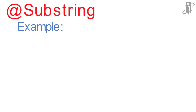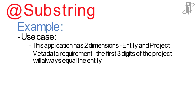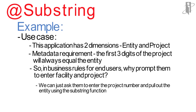Let's look at an example. In this case, I have an application that has an entity dimension and a project dimension. One of the metadata requirements is that the first three digits of the project number will always equal the entity. So if I have business rules in planning that I need to run for end users, why prompt them to enter both facility and project when I can prompt them to enter just their project and automatically pull out the facility using the substring function? This reduces the amount of key interaction for end users.